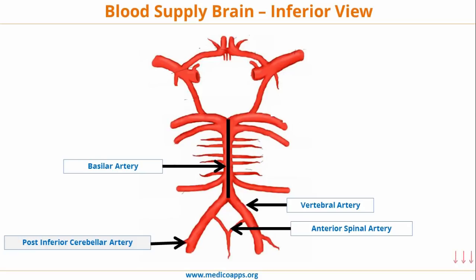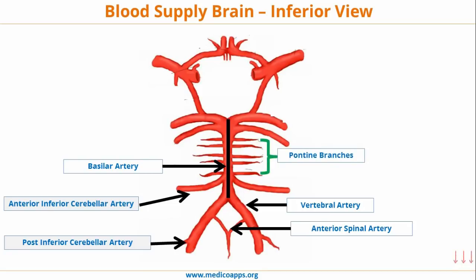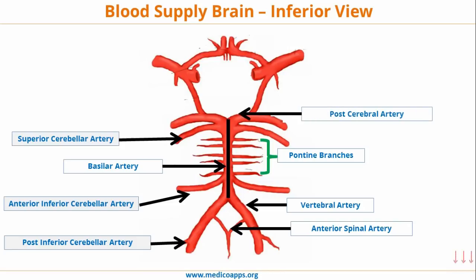Once the vertebral arteries fuse, they form the basilar artery, which gives three very critical branches. The first is the anterior inferior cerebellar artery. Then there are the pontine branches, which provide blood supply to critical structures in that area, especially the internal capsule. Finally, it gives the superior cerebellar artery. The basilar artery ultimately terminates into the posterior cerebral artery.